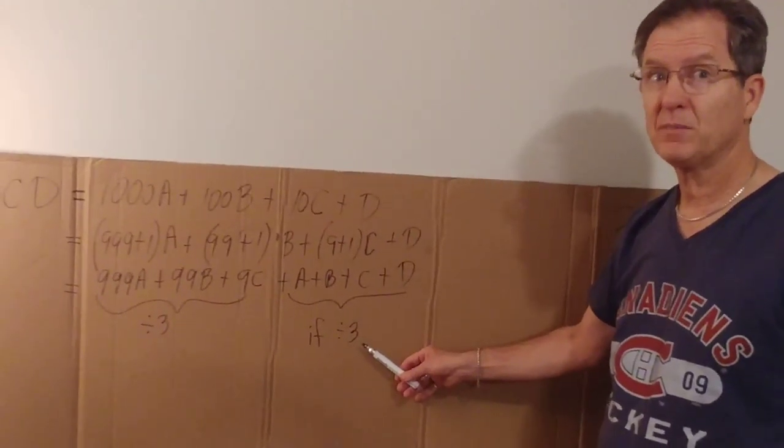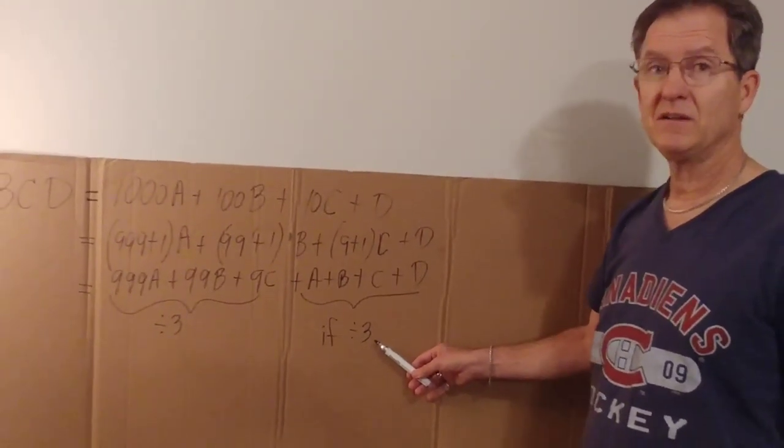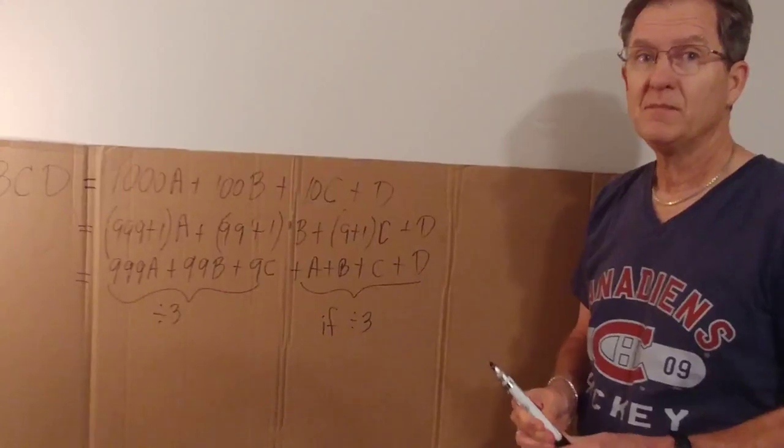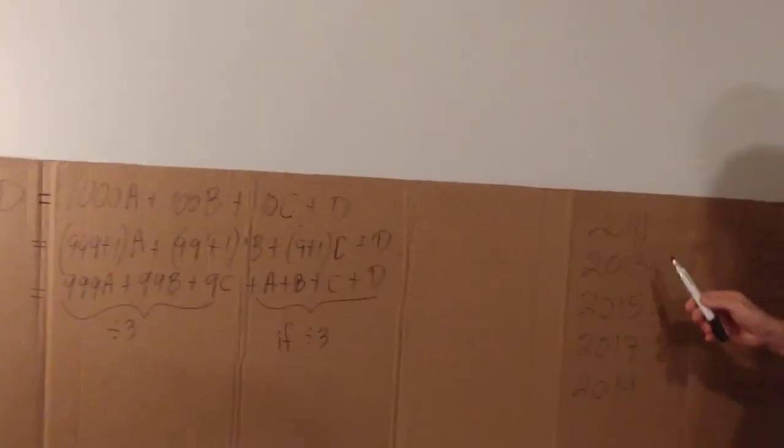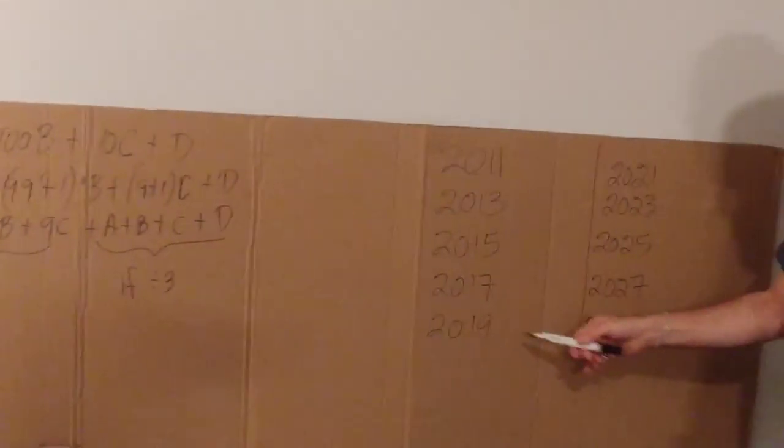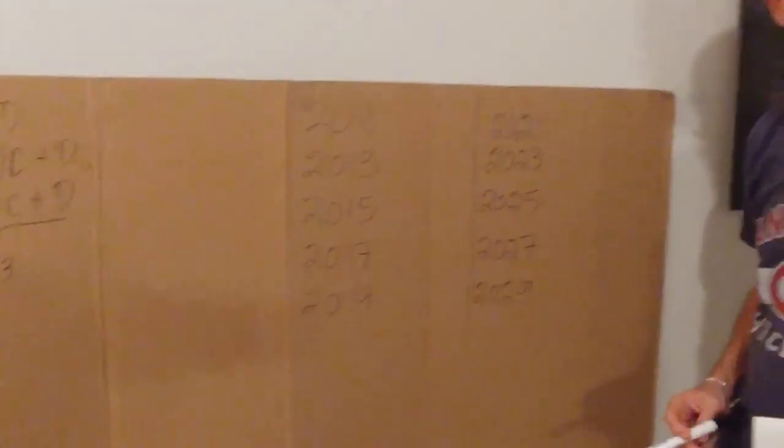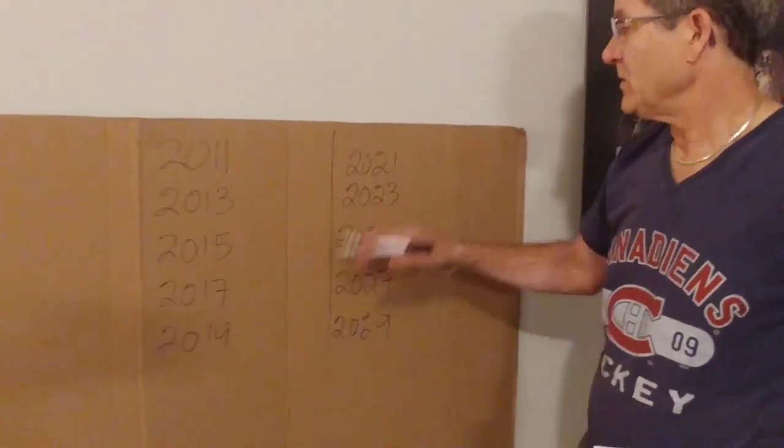So that's why it works. Now let's apply that to finding if a number is prime or not by looking at some of the years in the vicinity of this year, which is 2019.